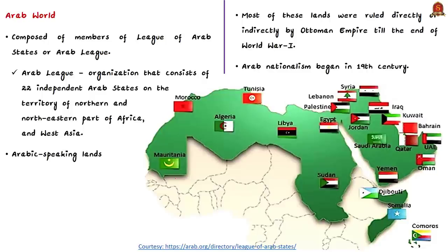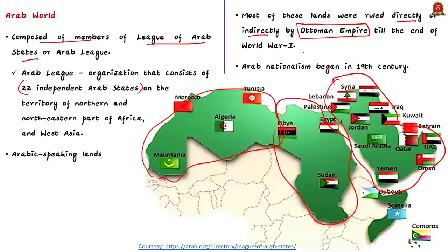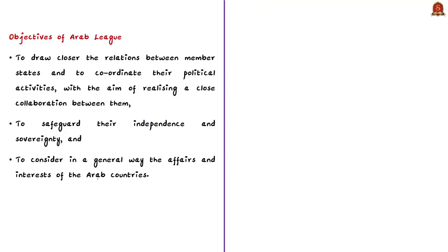The Arab world is composed of members of the League of Arab States. The Arab League consists of 22 independent Arab nations located in northern and northeastern Africa and West Asia or the Middle East — Arab-speaking lands. Most of these lands were ruled directly or indirectly by the Ottoman Empire until the end of World War I. Arab nationalism began in the 19th century, leading to the fall of the Ottoman Empire. In 1945, the Arab League was formed with objectives including drawing closer relations between member states, coordinating political activities, and realizing close collaboration among members.